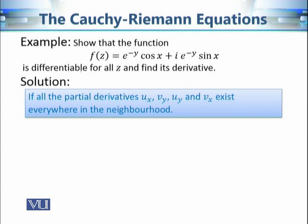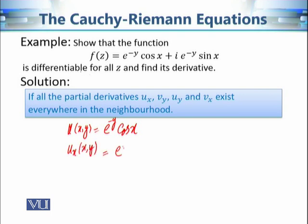The second condition requires that the partial derivatives u_x, v_y, u_y, and v_x must exist everywhere in the neighborhood. Since u(x, y) = e^(−y)·cos(x), the partial derivative u_x = −e^(−y)·sin(x), which exists because e^(−y) and cos(x) are both differentiable and their product is differentiable. Similarly, u_y = −e^(−y)·cos(x), which also exists.